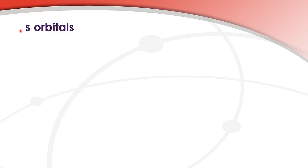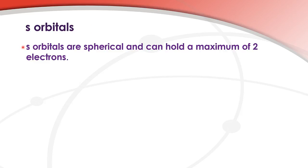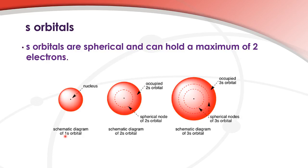S orbitals. S orbitals are spherical — that means they're round — and can hold a maximum of two electrons. Here's a diagram of a 1s orbital. It represents the region of space where there's a 95% chance of finding an electron.